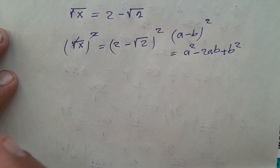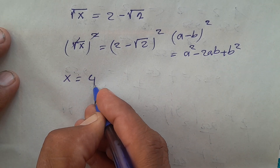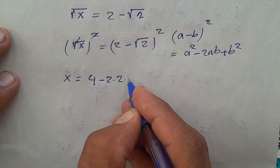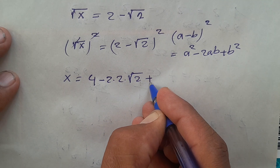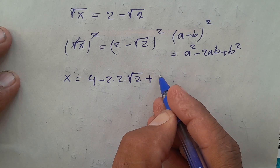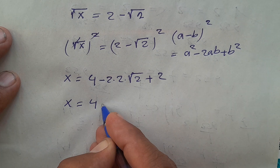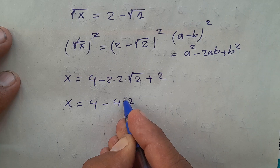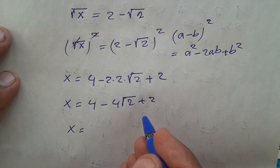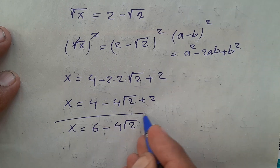And now x equals 2 squared, which is 4, minus 2ab — where a is 2 and b is square root of 2 — plus square root of 2 squared, which is 2. So x equals 4 minus 4 square root of 2 plus 2, and x equals 6 minus 4 square root of 2. So this is the value of x.